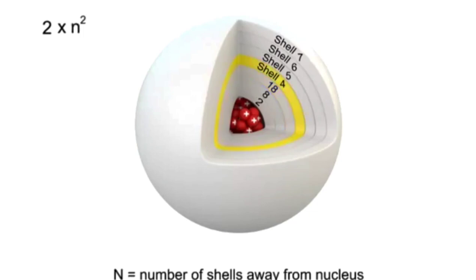And for the fourth shell, it would be 2 times 4 squared, or 2 times 16, yielding 32 electrons, and so on.